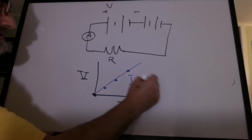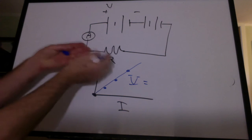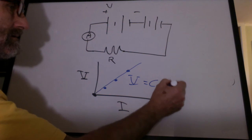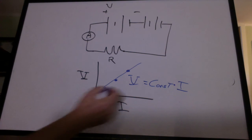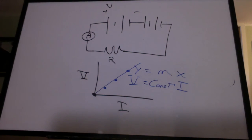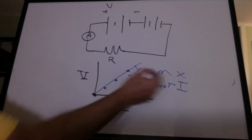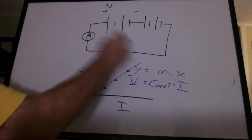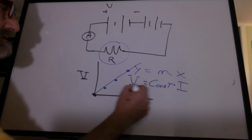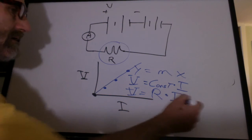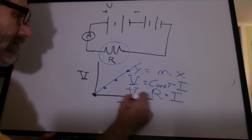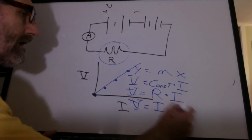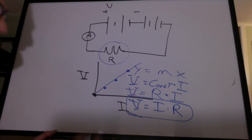This is like y equals mx. Well, what do you think the slope is on this equation? The only thing that's constant in this circuit right now is the resistance. So the voltage is equal to the resistance times the current. Well, we don't normally write it this way. We write voltage is equal to IR. This is Ohm's law.